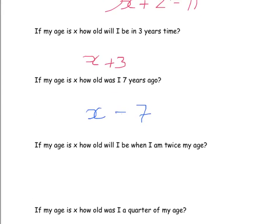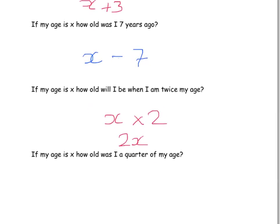If my age is x, how old will I be when I'm twice my age? Well, twice means doubling, making it twice as big. So it's my age times by 2. But remember, we don't need to put in this times sign, so we actually write this as 2x. So it's twice my age, 2 times my age.